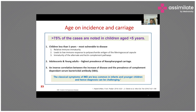Secondly, there is immaturity of the alternate and lectin complement pathways in young children. Third, the level of serum bactericidal antibody (SBA) is highest at birth and among adults, but lowest in children between 6 months and 2 years of age — exactly when the highest incidence of disease occurs.